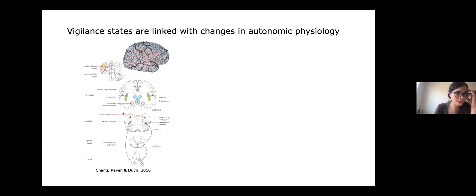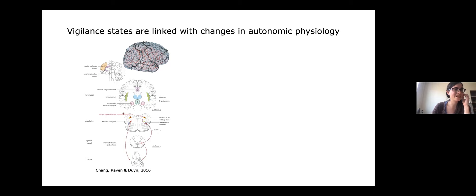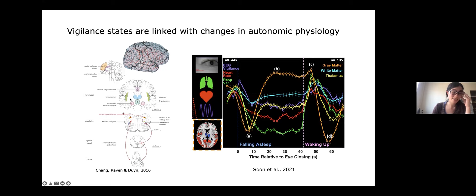So far we've been focusing primarily on neuroimaging measurements, but the more I got interested in vigilance and started studying these signals, the more apparent it became that there are close connections between the brain and body that we can't ignore. Changes in vigilance are closely linked with autonomic effects like breathing, heart rate, and brain vasculature. Recent work from Michael Chee's lab looked at microsleeps — brief sleep events that can occur when someone drifts off in the scanner — and found reliable changes in fMRI signals as well as peripheral physiological measures like heartbeat and respiratory variation at the occurrence of microsleeps.